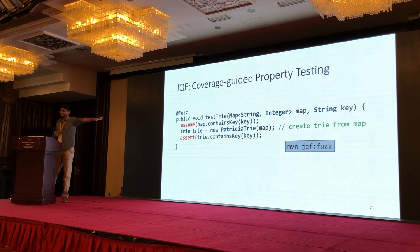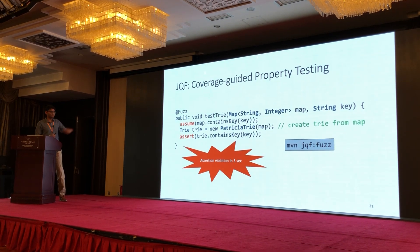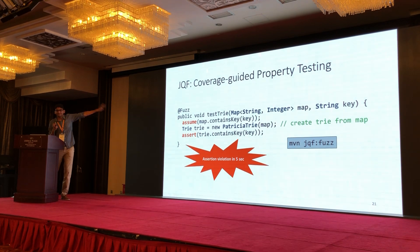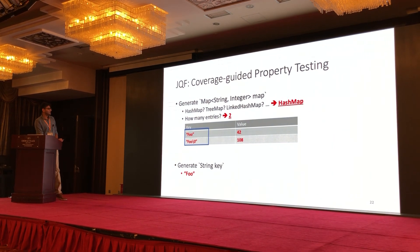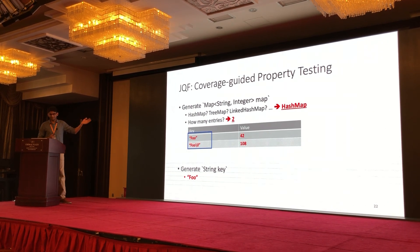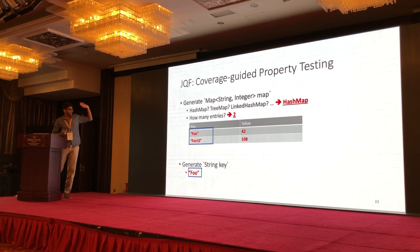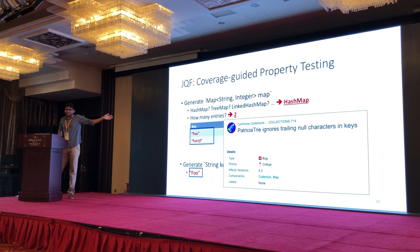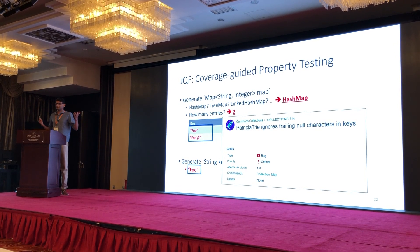JQF takes the same property test. The only difference is the command: instead of maven test, you run maven jqf fuzz. And in just five seconds on average, you get an assertion violation — an input that meets the assumption but does not satisfy the assertion. Here's an example of such an input: a hash map with two entries whose keys only differ in a null byte. In Java, null bytes don't terminate strings. With this input the assertion fails — it's actually a bug in the implementation of Patricia trie. It's almost impossible to generate such an input using QuickCheck, but JQF can find it in just a few seconds.